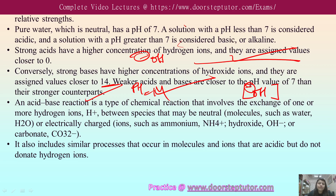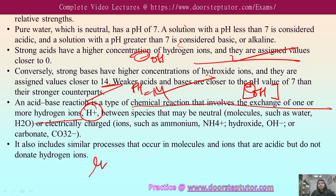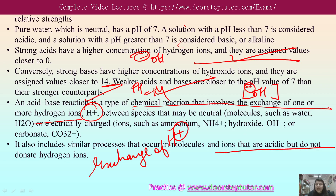In an acid-base reaction, there is an exchange of one or more hydrogen ions (H+) between species, which may be neutral — for example water — or electrically charged — for example ammonium (NH4+) or hydroxide. This exchange of H+ between acids and bases is the essence of an acid-base reaction.